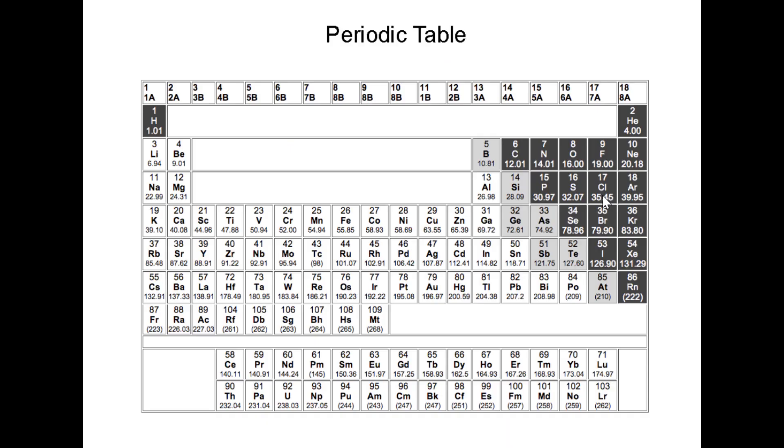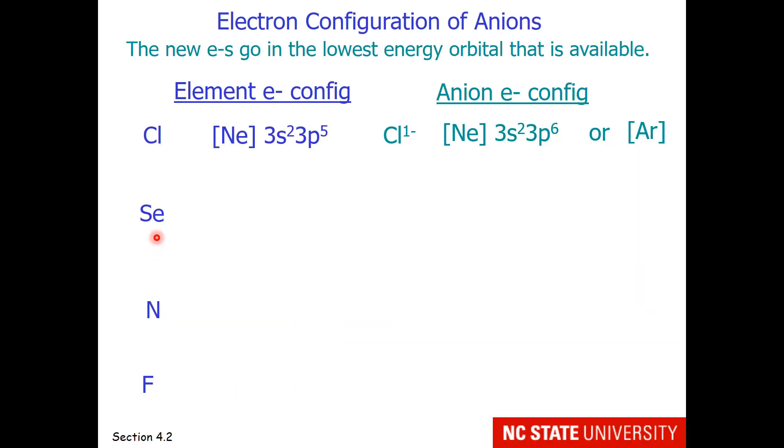When dealing with anions, we simply need to step to the right. The electron configuration of Cl1- is argon. For neutral selenium, the electron configuration has at the end 4p4. So there is space for two more electrons.